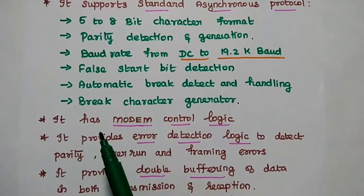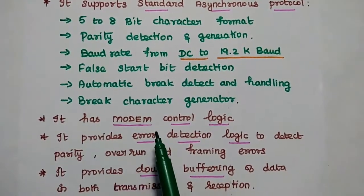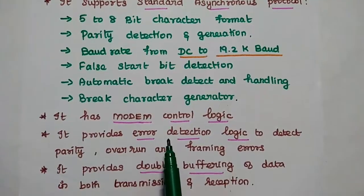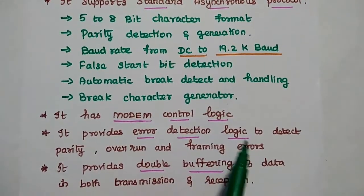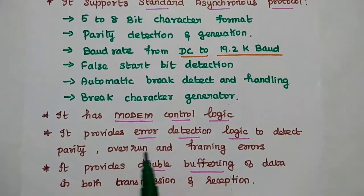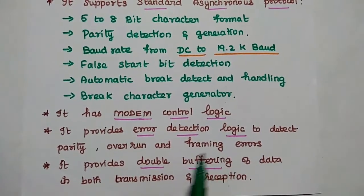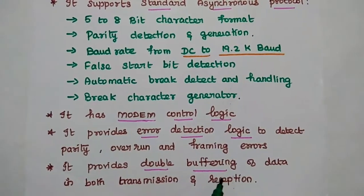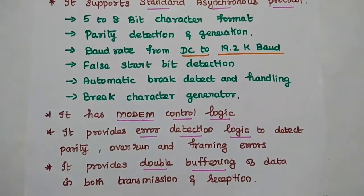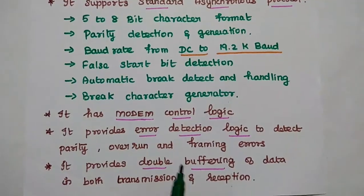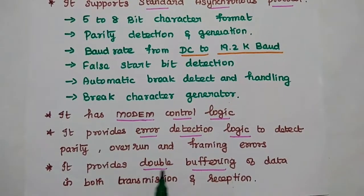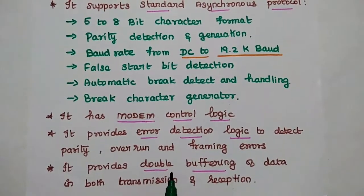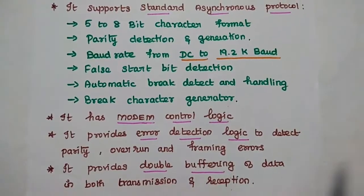The 8251A has modem control logic. It provides error detection logic to detect parity, overrun, and framing errors. It provides double buffering of data in both transmission and reception, and also has separate clock signals for the transmitter and receiver.